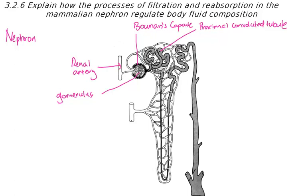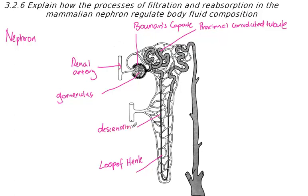Once we get past the proximal convoluted tubule, it goes down into this structure called the loop of Henle. The loop of Henle has a descending arm, or limb, and an ascending limb.